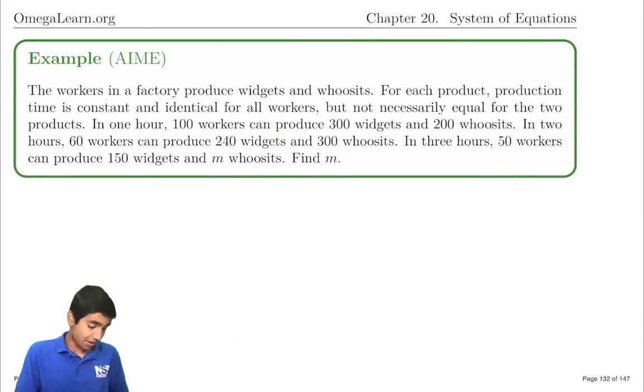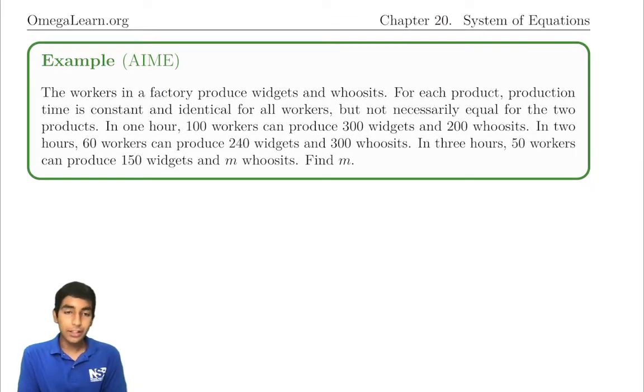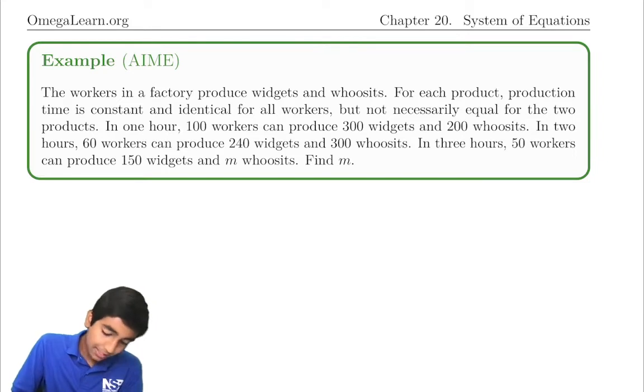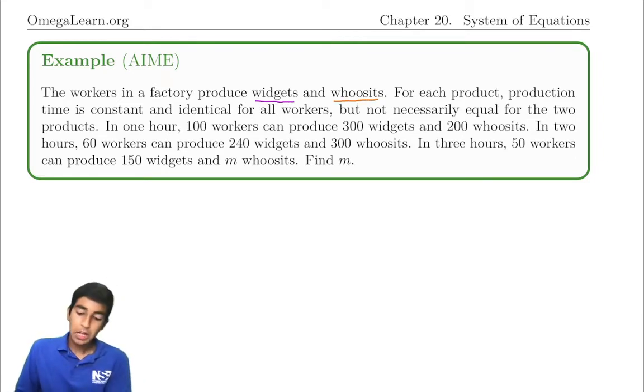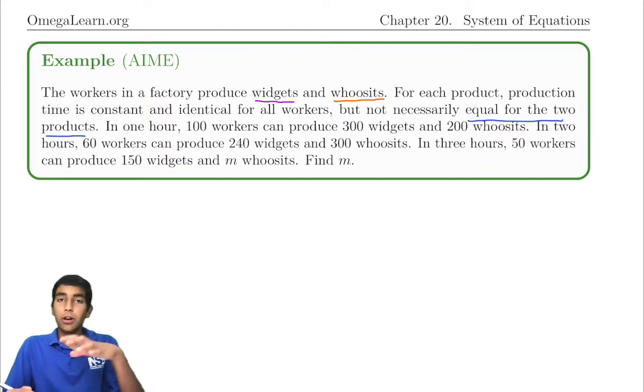Now we're taking a look at this one. The workers in a factory produce widgets and whoosits. For each product, the production time is constant and identical for all workers. So it doesn't matter how strong or fast the workers are, we're just saying they're all the same, unlike real life. For each product, the production time is constant, but not necessarily equal for the two products. So one product could be more complex or take more time.